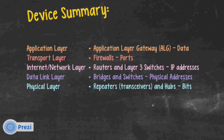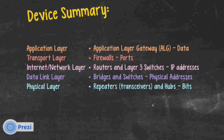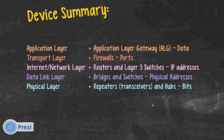Device summary: the application layer has application layer gateways (ALGs) — they examine data and make decisions based on the contents of the data. The transport layer has firewalls, which make decisions based on port numbers. The internet and network layer has routers and layer 3 switches, which make decisions based on IP addresses. The data link layer has bridges and switches, which make decisions based on the physical or MAC address. The physical layer has repeaters, transceivers, and hubs — they don't make any decisions; they just forward all the bits straight out the door.